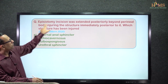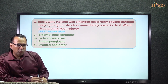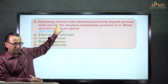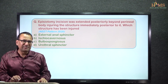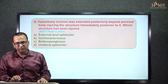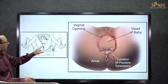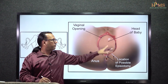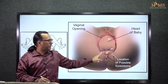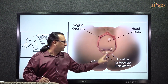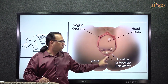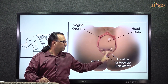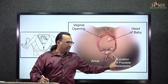Why do you perform episiotomy? It is done during vaginal delivery when the head of the baby in the second stage of labor is crowning, just to enlarge the vaginal introitus. It could be a midline incision or it could be a mediolateral incision.